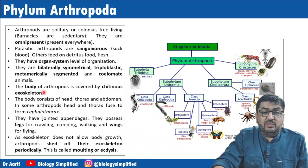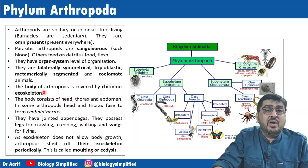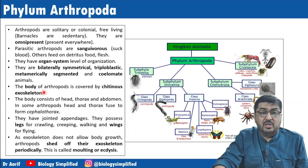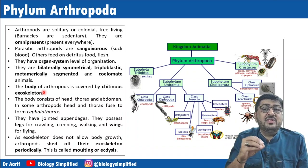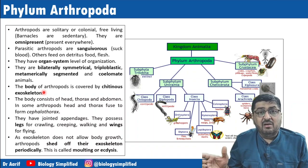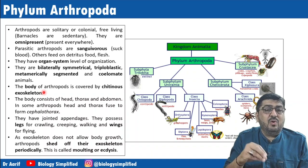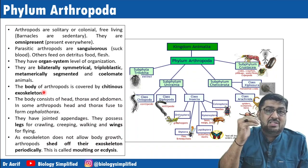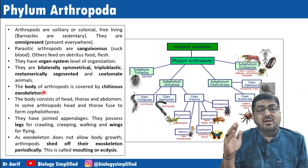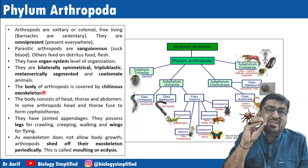The body of Arthropods is covered by a chitinous exoskeleton. Since we have already covered the discussion on cockroach, the rest of the Arthropoda discussion will be straightforward. Cockroach is the best representative of this phylum, and the characteristics described here are based on cockroach. The body consists of head, thorax, and abdomen — head and thorax fuse to form cephalothorax in some groups.